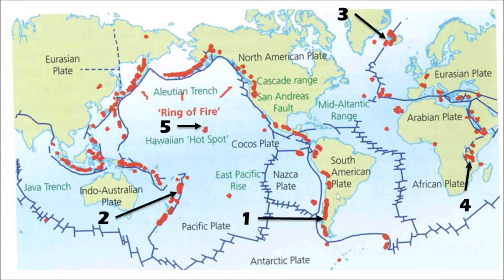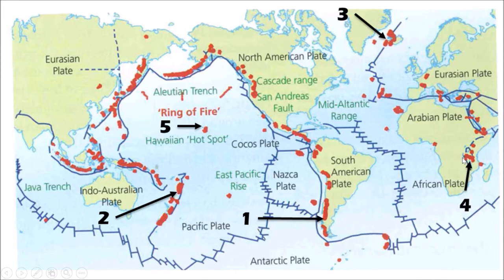On the other hand, in locations three and four, we've got divergence occurring - plates moving apart - what we would call a constructive plate boundary. That can be oceanic and oceanic crust diverging, as is the case of the mid-Atlantic ridge, most notably in Iceland. Or in the case of location number four, where we've got two bits of continental crust separating - the East African Rift Valley - and the volcanic activity associated with that occurring as a result of the divergence of that continental crust.